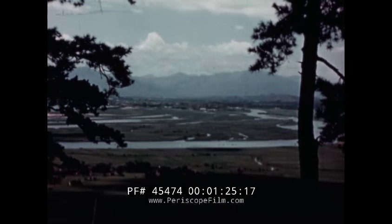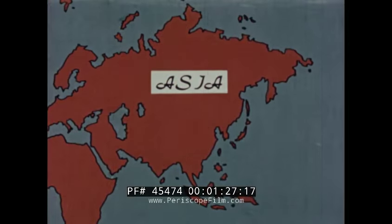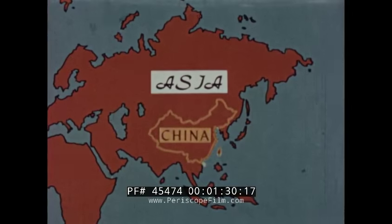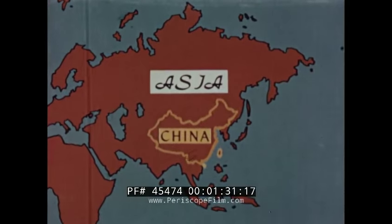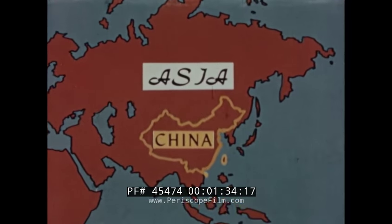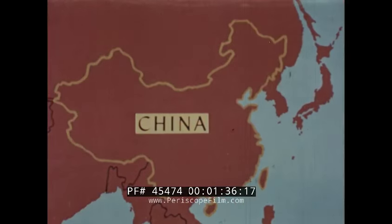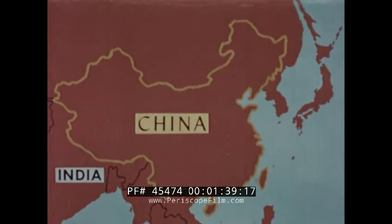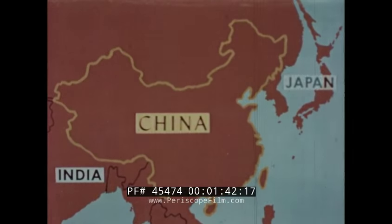To see something of China's size, let's look at a map. In the continent of Asia, China occupies about one-fourth of all the land area. On the west, China reaches to the boundary of India. On the east, the coast is opposite Japan.